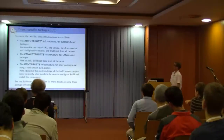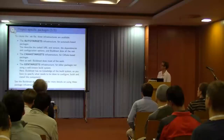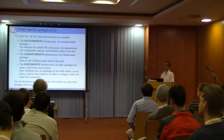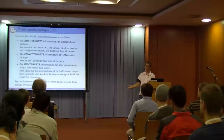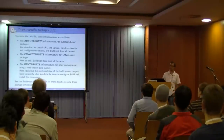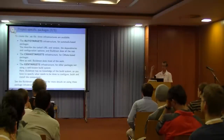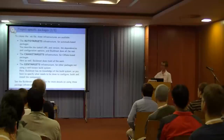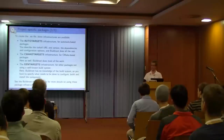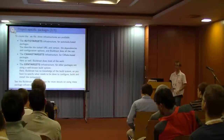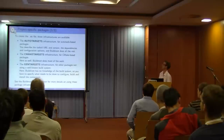BuildRoot provides three infrastructures for writing package recipes: autotargets for autotools-based packages, cmake-targets for CMake-based packages, and generic targets for everything else. For an autotools package, you just specify the tarball location, version, and any --enable-foobar flags — BuildRoot handles configure arguments, libtool munching, and all the nasty details automatically. Same for CMake targets. For generic targets, you specify the exact commands to configure, build, and install.